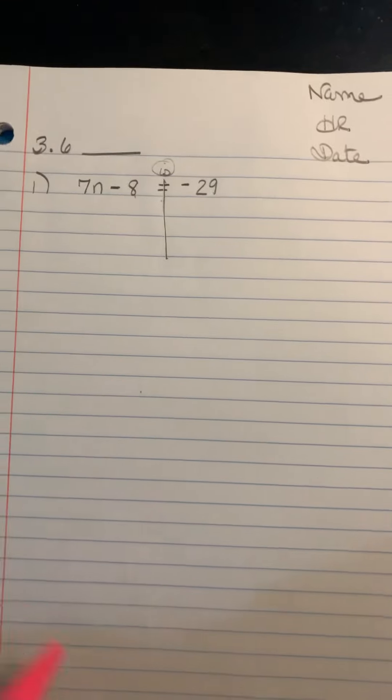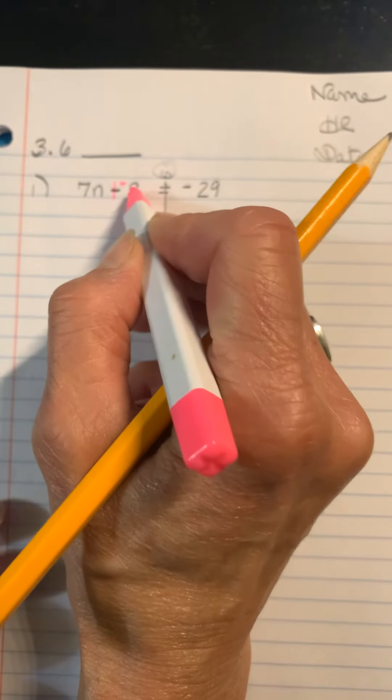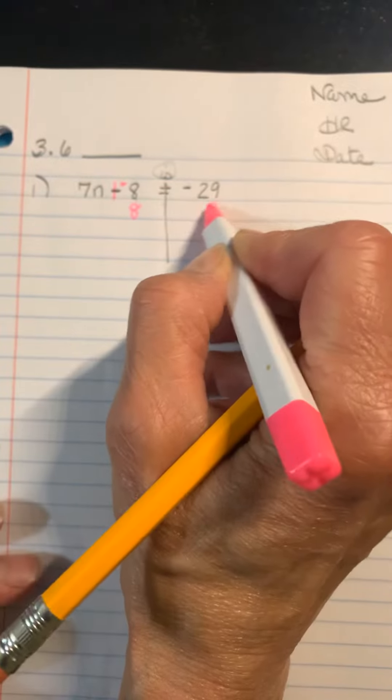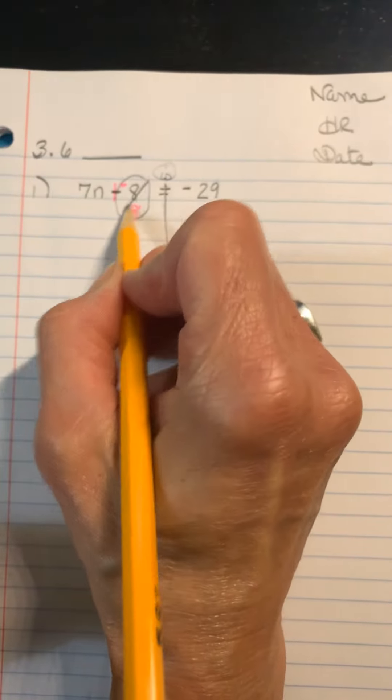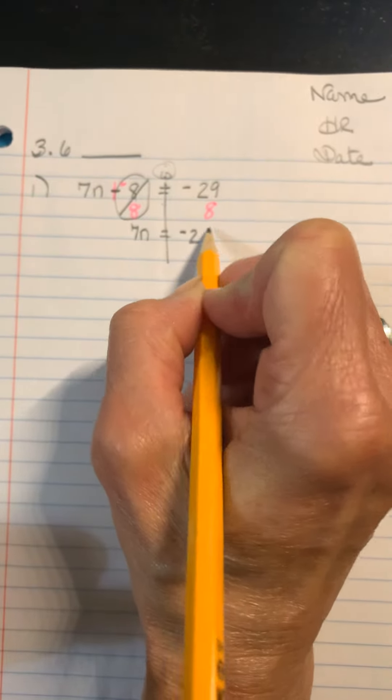Start by getting rid of the subtraction by doing plus negative. Additive inverse to move the constant and start to isolate the variable. So you're adding 8 to both sides like that. Then this is your additive inverse 0. 7n is equal to negative 21.